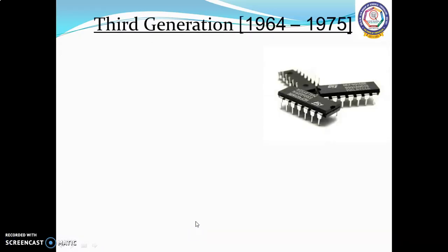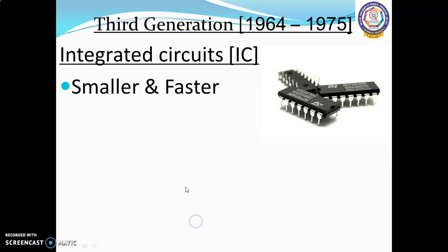Third generation of computers, 1964 to 1975, used IC integrated circuits. Computers were smaller, faster, and more reliable. Microcomputer series such as IBM and Apple were developed. Portable computers were accessible and consumed less power. High-level languages were used in the integrated circuits.